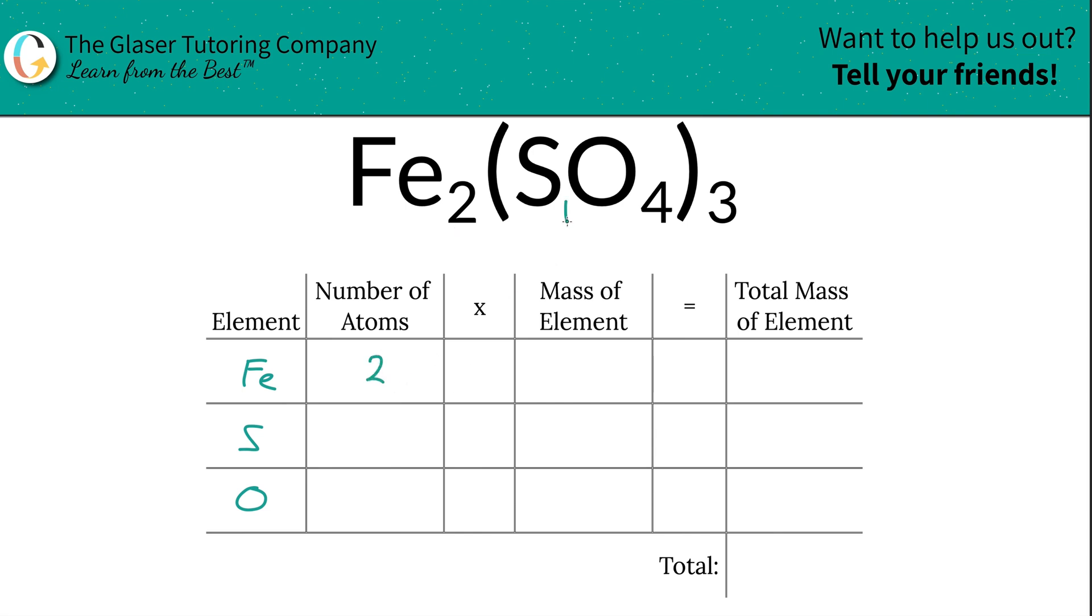Sulfur is tied up inside the polyatomic anion sulfate. To find the total sulfur, take the subscript of sulfur and multiply it by the outer subscript of 3, giving us 3 sulfur atoms. Same thing for oxygen—multiply those numbers together to get 12.